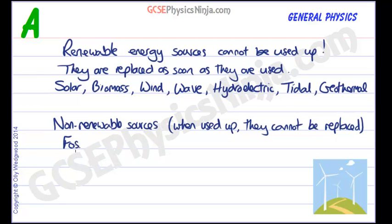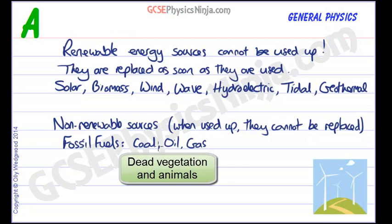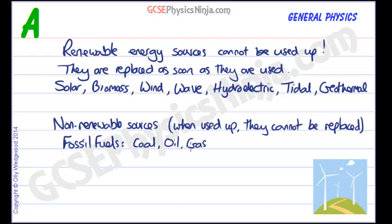Non-renewable sources include fossil fuels such as coal, oil and gas. Coal, oil and gas were formed over millions of years from plants and vegetation that were compressed into the earth. It took a long time, so we're not going to be able to reform coal, oil or gas in our lifetimes — let alone in a hundred lifetimes. It's going to take millions of years, so these are non-renewable.